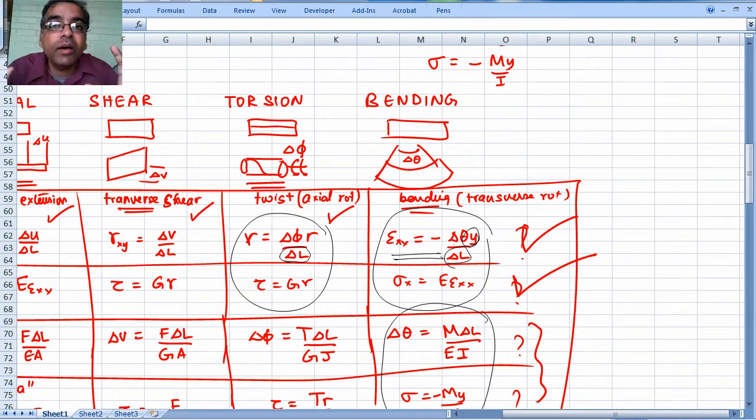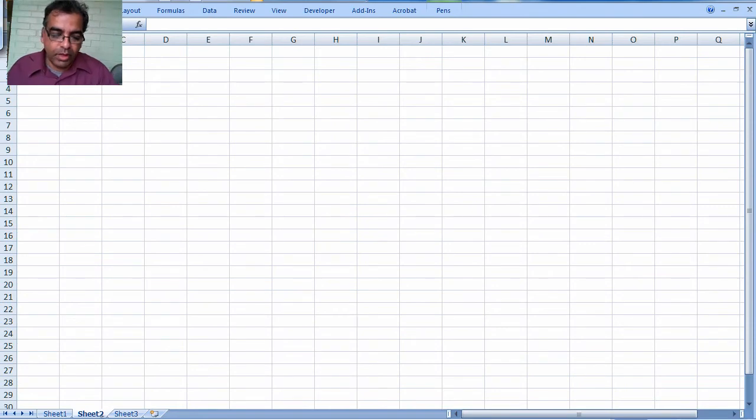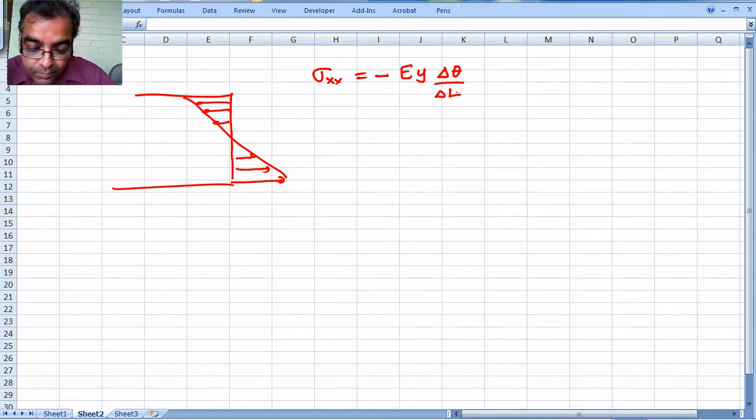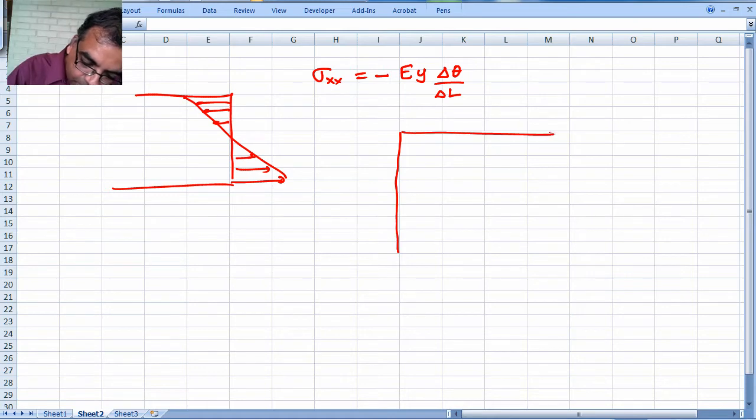This one takes a little bit of doing because it's a bit more complicated than what you would do for a torsion problem where the situation was easy. Here you have to do a little bit more on the integration side. Remember that our cartoon for shear stress looked like that, and we figured out that sigma xx equals minus E y delta theta over delta l.